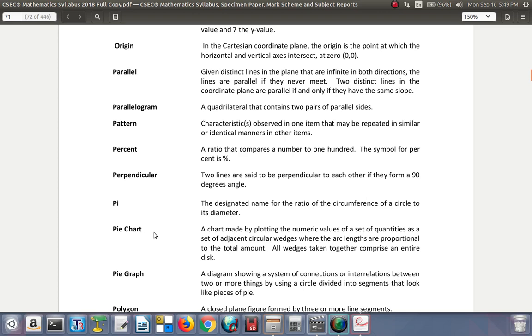Pie Chart. A chart made by plotting the numeric values of a set of quantities as a set of adjacent circular wedges where the arc lengths are proportional to the total amount. All wedges taken together comprise an entire disk. That's a pie chart.